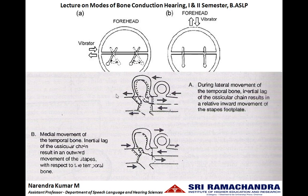Applying this to middle ear physiology: when the bone vibrator is placed at the side of the head and the temporal bone vibrates laterally, there will be a relative inward movement of the footplate of stapes towards the cochlea. When the temporal bone moves medially, the ossicles remain in the same position, so there is a relative outward movement of the footplate of stapes away from the cochlea. This ossicular movement reinforces cochlear activity in bone conduction hearing when the bone vibrator is placed at the side of the head.